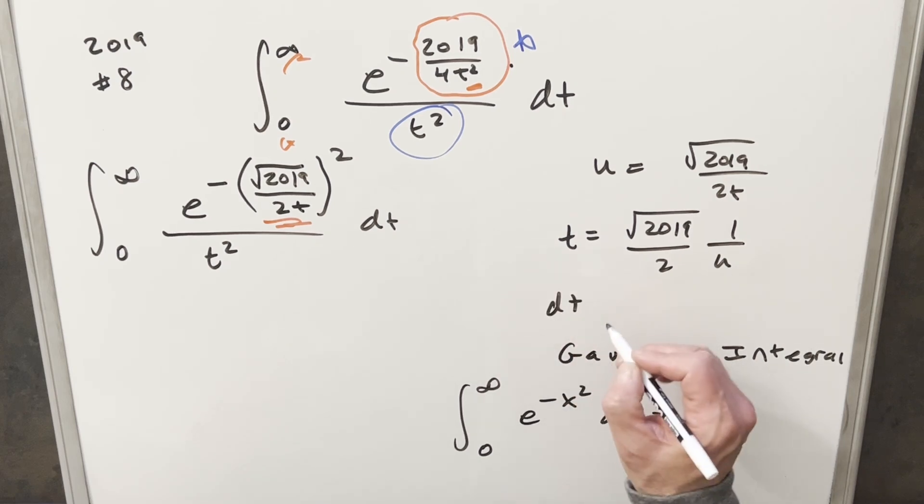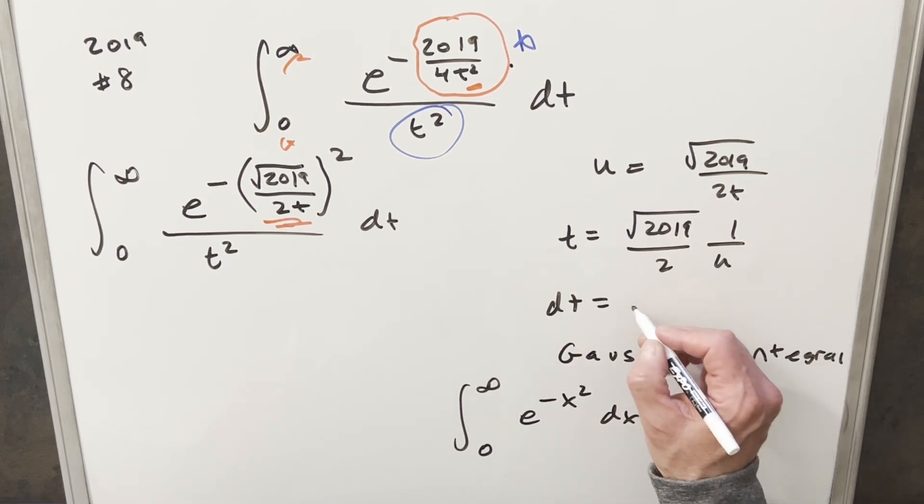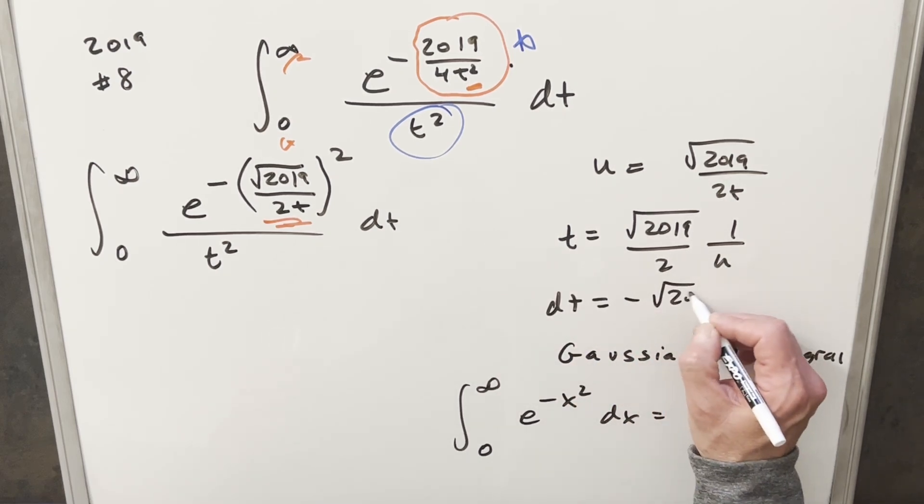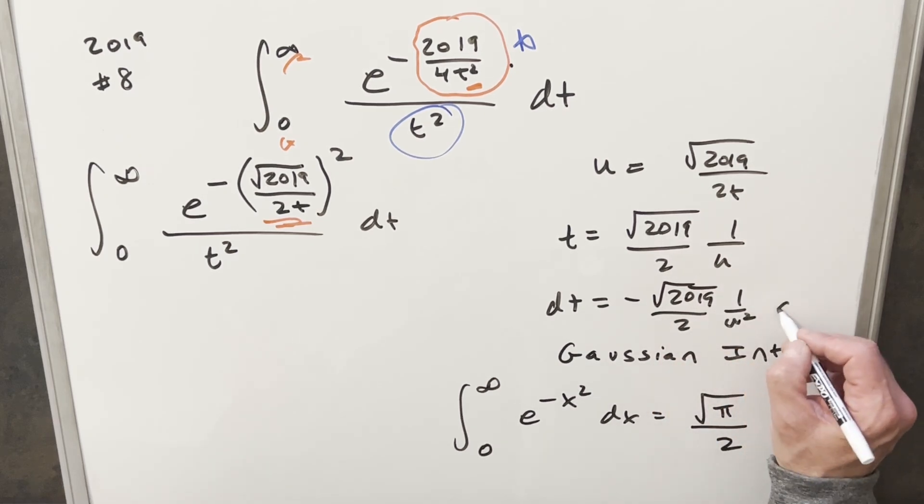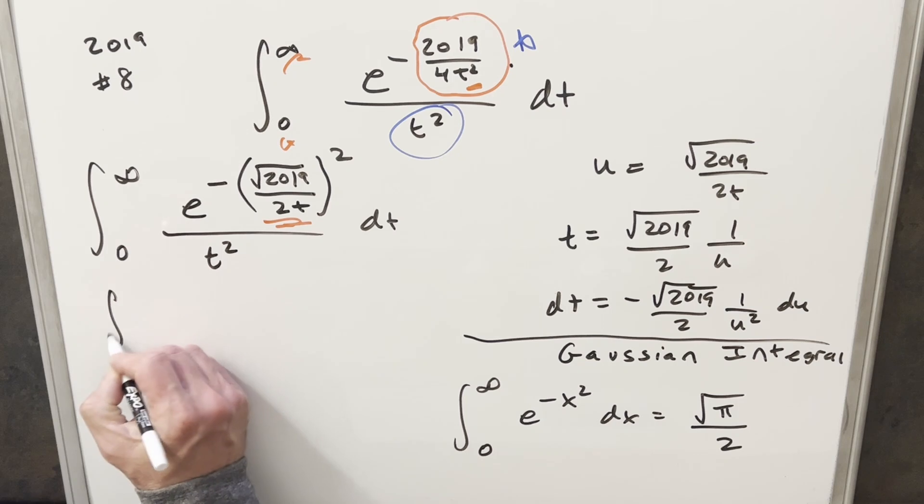Then I'll go ahead and take a derivative to get our dt value. So this is going to become, I'll bring a minus out front, square root of 2019 over 2. And this is going to become 1 over u squared du. So now we'll just go ahead with this substitution.